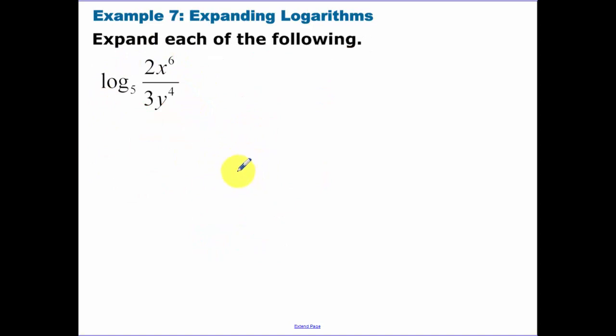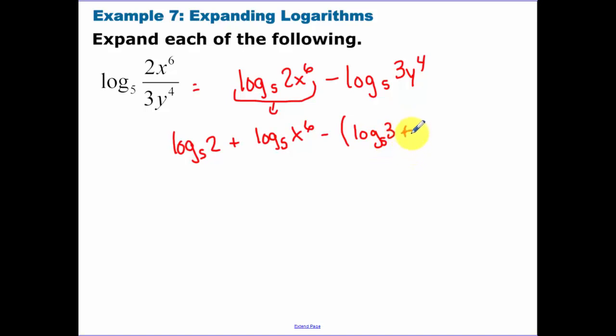Now expanding this. First let's do our division piece. So I can break this down into log base 5 of 2x to the 6th minus log base 5 of 3y to the 4th. Now dealing with this first term, which is multiplication, log base 5 of 2, you can expand that under addition. And then in parentheses we have log base 5 of 3 plus log base 5 of y to the 4th.